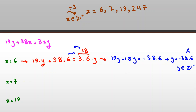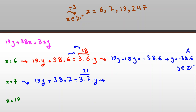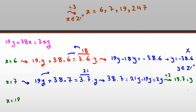Second case, x=7: substituting gives 19y + 38×7 = 3×7×y = 21y. Taking 19y to the right: 38×7 = 21y − 19y = 2y. Dividing both sides by 2: y = 19×7 = 133. So x=7 and y=133 is one valid answer.